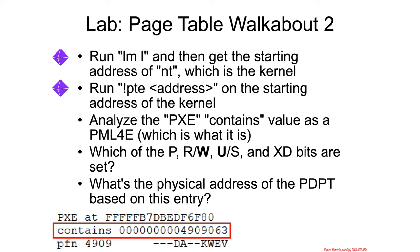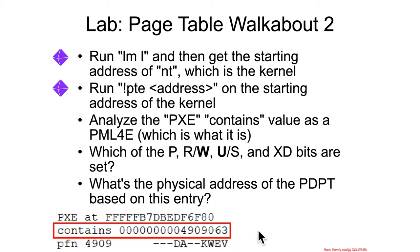Specifically, I want you to look at the place where it says PXE at blah contains foo — so whatever this foo value is right here. The PXE is WinDbg's term for the page map level 4 entry, so this can be interpreted according to those bits in the slides from just a second ago. I want you to go look at those bits manually and figure out which of the present, read-write, user-supervisor, and XD bits are set in this particular entry. I also want you to tell me what the physical address of the page directory pointer table is based on this entry.